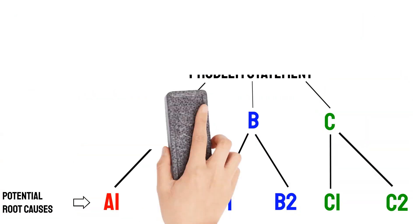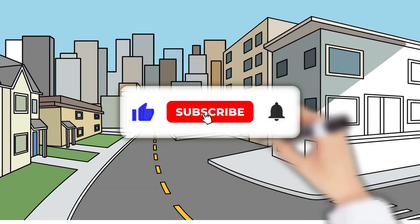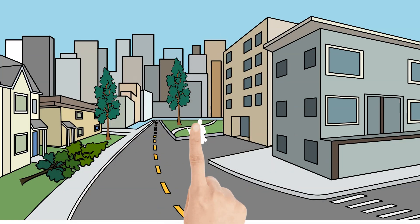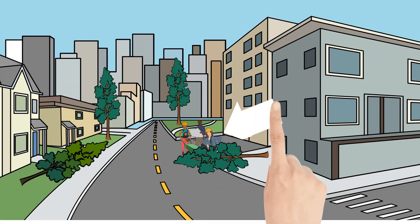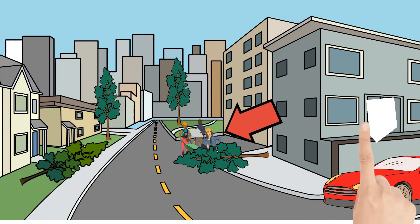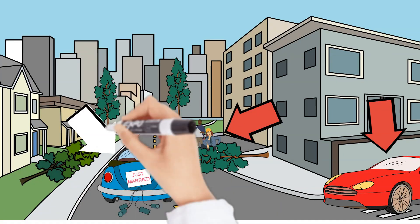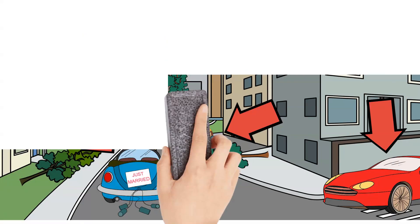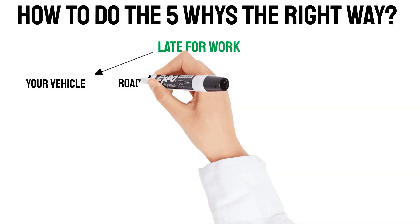Let's take our 'late for work' problem. The first step is to frame the problem — let's take a picture of the problem itself. We can see basically your way to work. What are the components we could use to structure our problem? I personally see there is a street, there is you as a component, your vehicle, and also other traffic participants. Let's build the logic tree based on our observations — one branch per component: your vehicle, the road, other participants, and you.